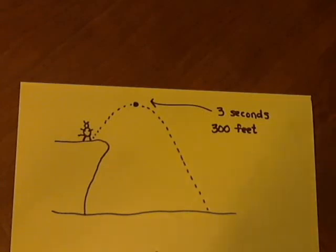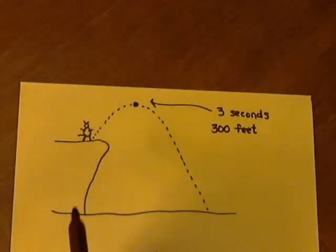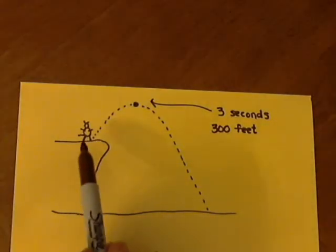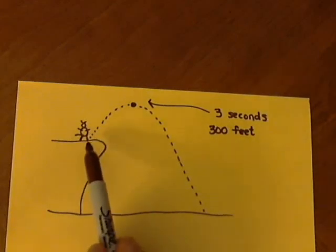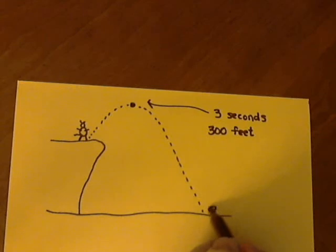All right, let's look at an application using the falling object formula. What we've got here is out in the desert, we've got the Wile E. Coyote up on a cliff, and he's about to launch himself, trying to catch the Roadrunner. Put the Roadrunner down here.